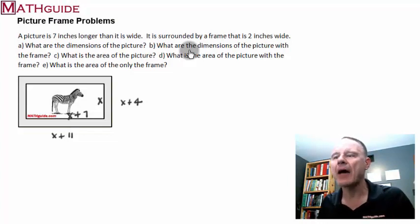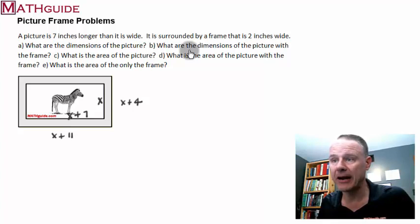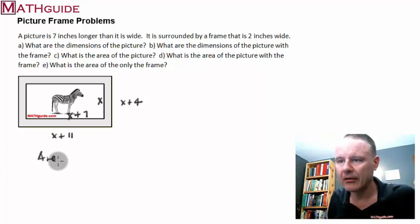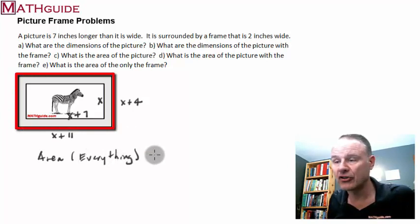We've already established what the area is of the picture and the picture with the frame, and we're going to need those two pieces of information to get the area of only the frame. So picture what's going on. We know the area of the whole thing. The area, this is the everything. In other words, this is the picture with the frame.